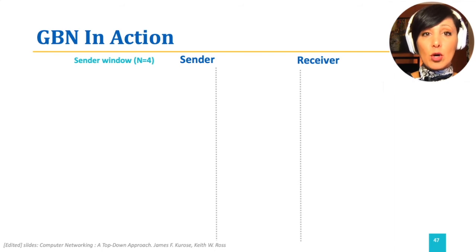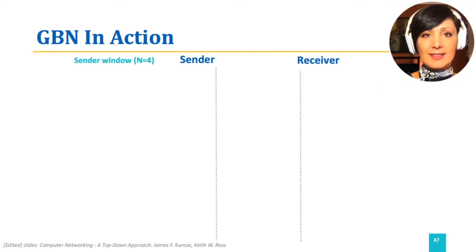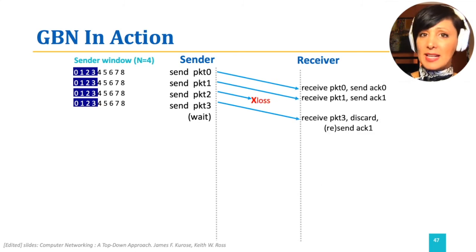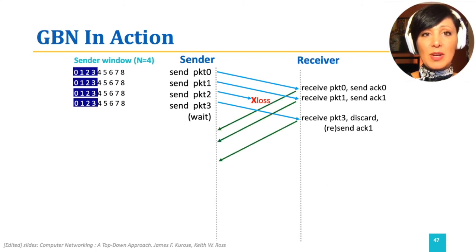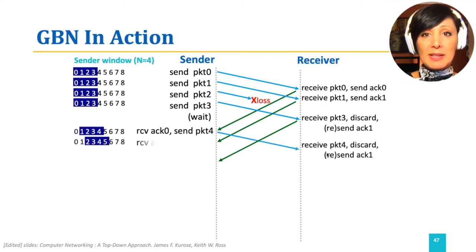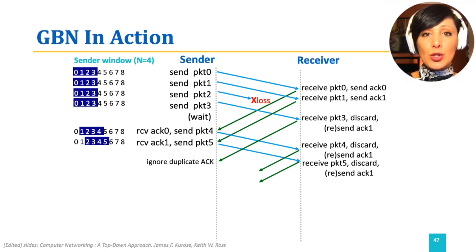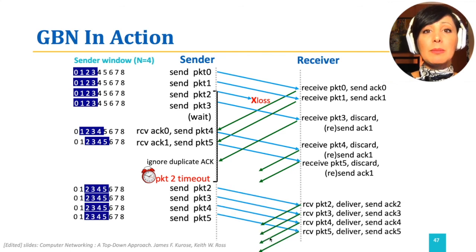Assume we have a window of size 4. This means the sender could have up to 4 unacknowledged packets on the fly. The sender sends packets 0 to 3 and waits for acknowledgement. If a packet, for example packet number 2, is lost, but packets after it are received, packets 3, 4, and 5 will be discarded. The acknowledgments from the receiver will keep acknowledging up to packet 1, which is the last in-order received packet. When the timeout for packet 2 happens, the packets from that sequence number will be retransmitted. When received properly on the receiver side, acknowledgments will also begin to reflect the increase in sequence number.